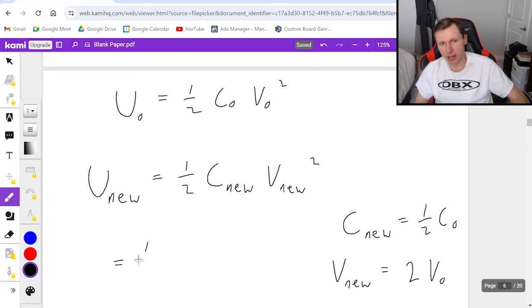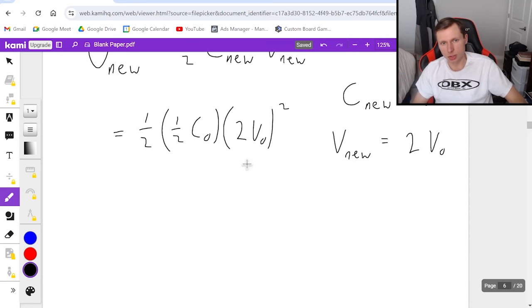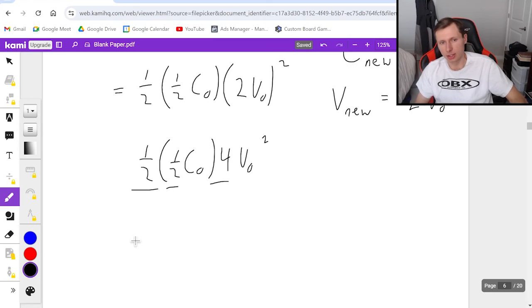Plugging that in, I'm going to get one half, one half C naught times two V naught quantity squared. Remember, if it's quantity squared, I got to square both numbers. So that's going to be four V naught squared. And then the one half times one half C naught is still there. And since this question just wanted the answer in terms of C naught and V naught, it means that I want to combine all these coefficients together, one half times one half times four, which just gets me one. So the answer, my new energy stored in the capacitor is equal to C naught times V naught squared.